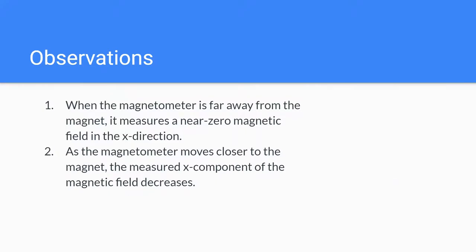And then as for observations requested in the lab instructions, these are the two that applied to my setup. So when far away, the magnetometer measured a near zero magnetic field in the x direction. And as it was moved closer, the measured x component decreased. That is to say, the magnitude increased, but it became more negative.